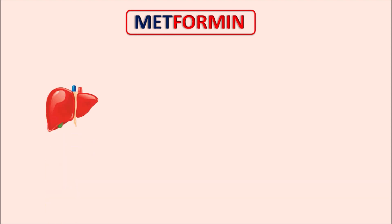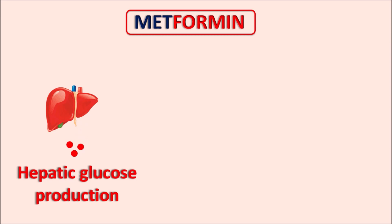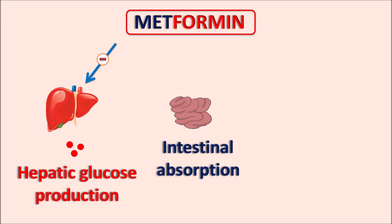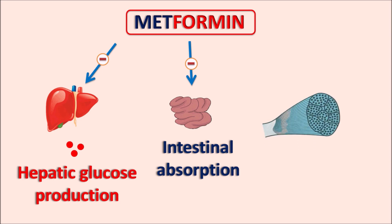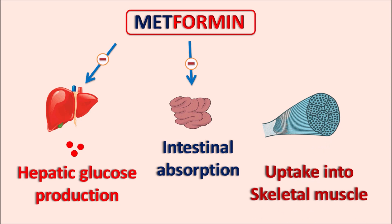Metformin shows important activity on three key organs. First, the liver — metformin blocks hepatic glucose production, which would otherwise raise blood glucose. Second, the intestine — metformin reduces carbohydrate and glucose absorption. Third, skeletal muscle — metformin stimulates glucose uptake into muscle. Among these, the action on the liver is mainly responsible for glycemic control.